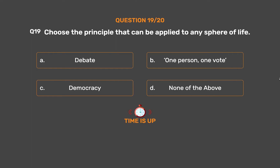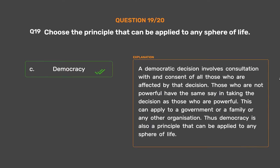The correct answer is Option C: Democracy. A democratic decision involves consultation and consent of all those affected by that decision. Those who are not powerful have the same say as those who are powerful. This can apply to a government, a family, or any other organization. Thus democracy is a principle that can be applied to any sphere of life.